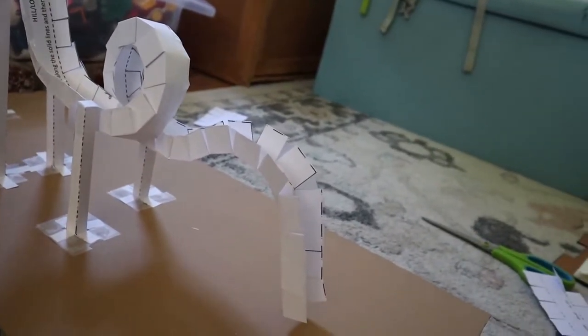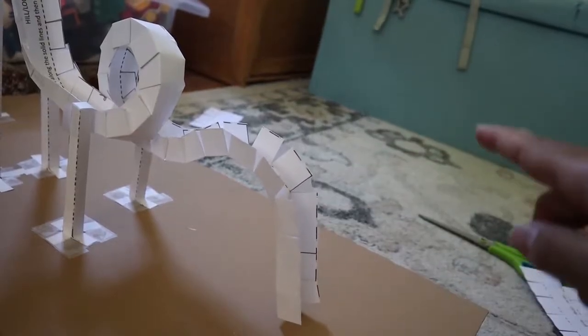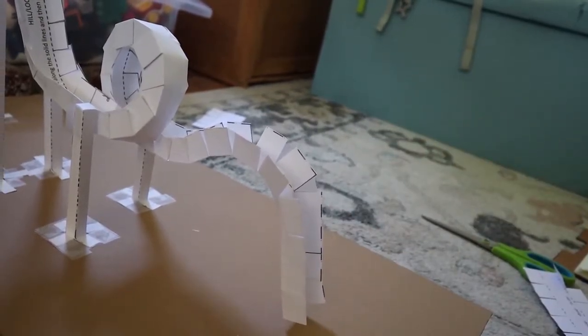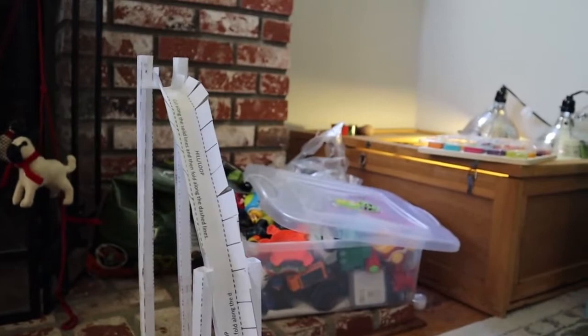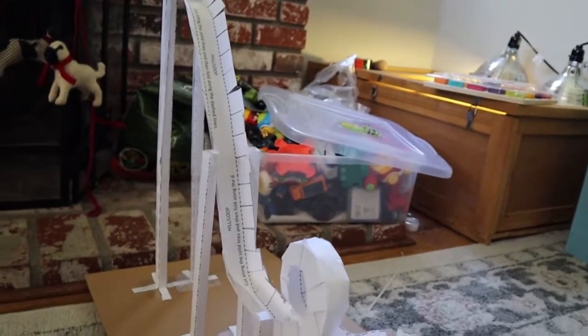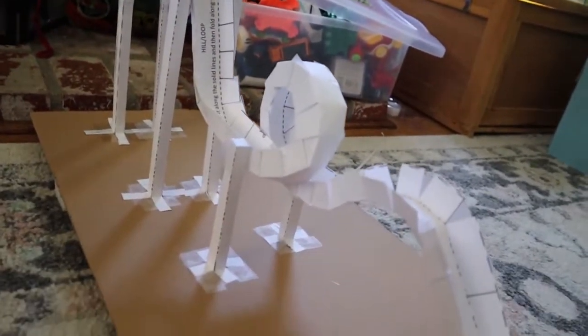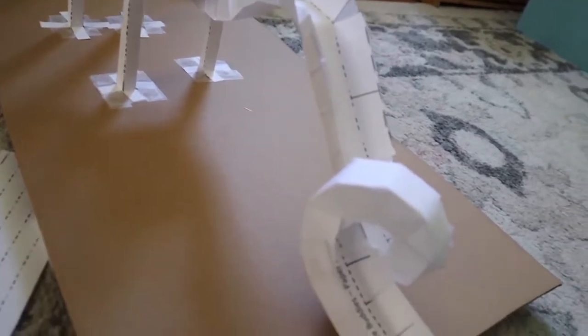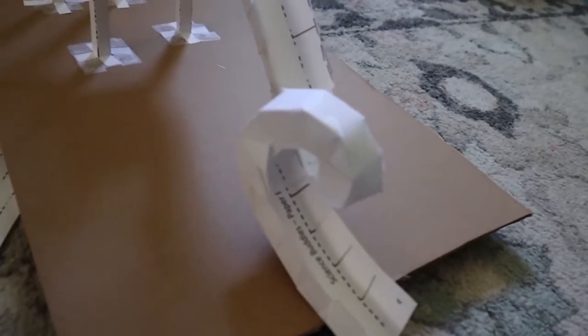And to finish it up, I'm gonna add one more loop and then it should be done. Okay, so here is the finished product. Got one loop, the hill, and the baby loop.